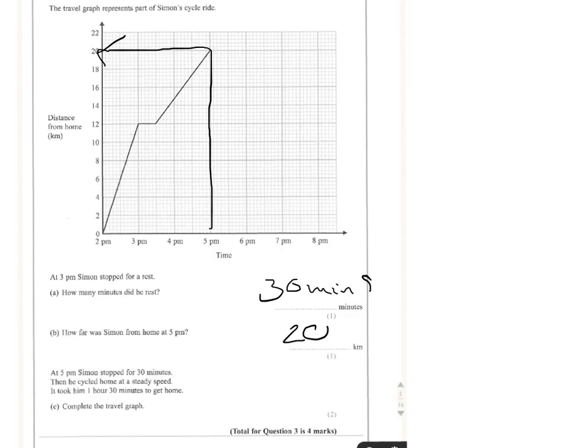But that's the answer there. Now finally, at 5pm, Simon stopped for 30 minutes, and then he cycled home at a steady pace. It took him one and a half hours to get home, complete the travel graph.